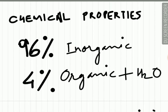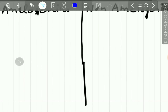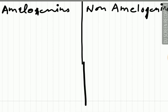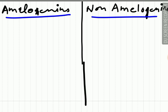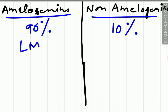Now let's study about the chemical properties of enamel. What makes enamel the hardest structure of the body is its inorganic content, which is 96%, with only 4% being organic structure and water. The organic material present in enamel is composed of proteins exclusive to the enamel, and lipid. These proteins are of two types: the amelogenins and the non-amelogenins. The amelogenins contribute 90% of the enamel proteins while non-amelogenins contribute 10%. The amelogenins are low molecular weight proteins, while the non-amelogenins are high molecular weight proteins.